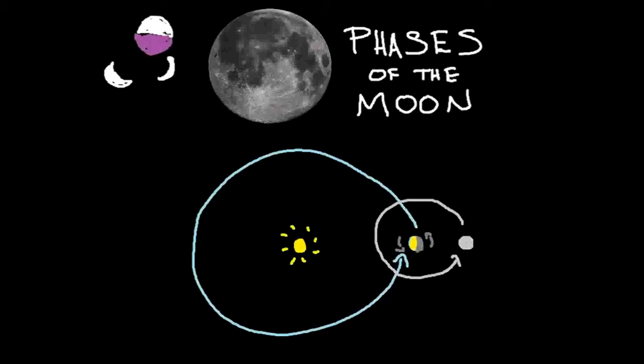So we actually have the same thing happening with the moon—the side that's facing the sun is lit up and the side that's not is dark. Now we don't see that because as the moon orbits the earth it actually is also spinning at the same time, and it keeps the same face facing us all the time.